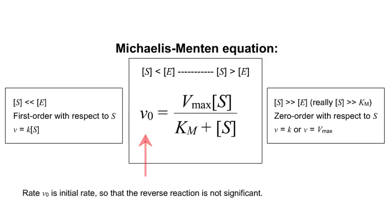The Michaelis-Menten equation is limited to the initial rate V0 so that we can ignore the possibility of the product accumulating and undergoing the reverse reaction.